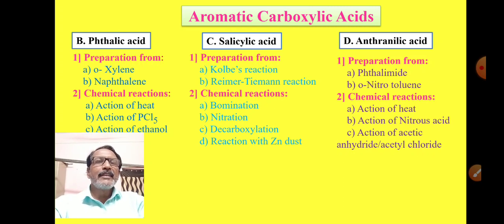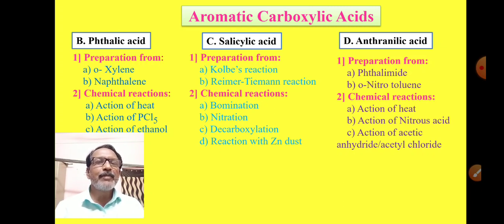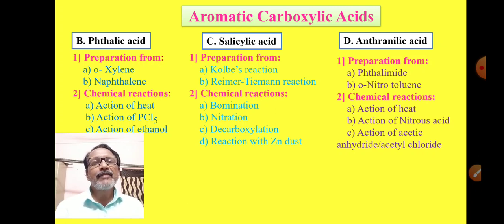In aromatic carboxylic acids there are two main parts: first, what are aromatic carboxylic acids and their classification; second, preparation and chemical reactions of four aromatic carboxylic acids — benzoic acid, phthalic acid, salicylic acid, and anthranilic acid. In the last period we discussed benzoic acid, and today we are going to discuss phthalic acid, salicylic acid, and anthranilic acid.